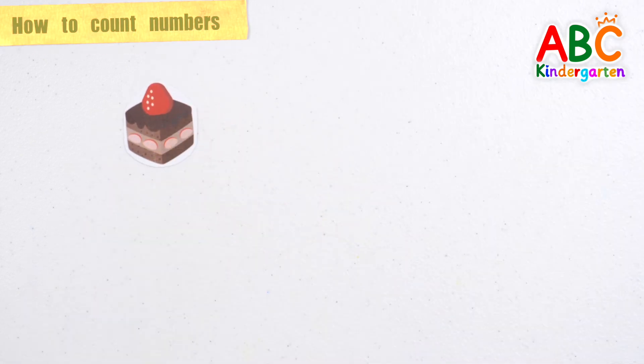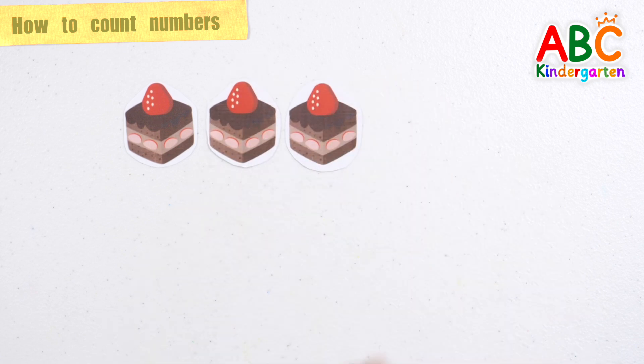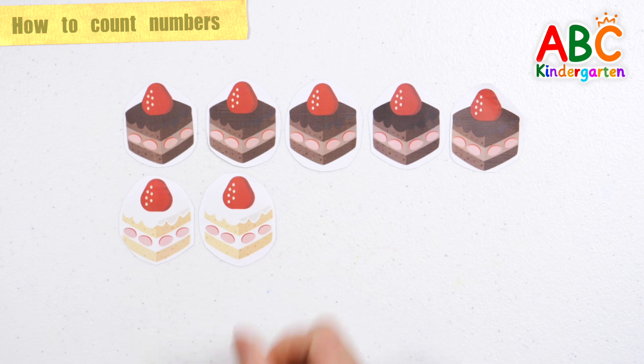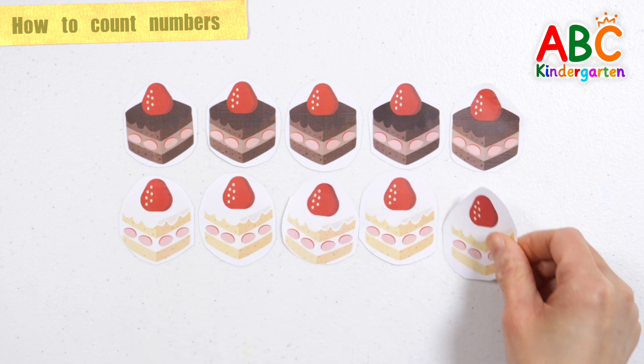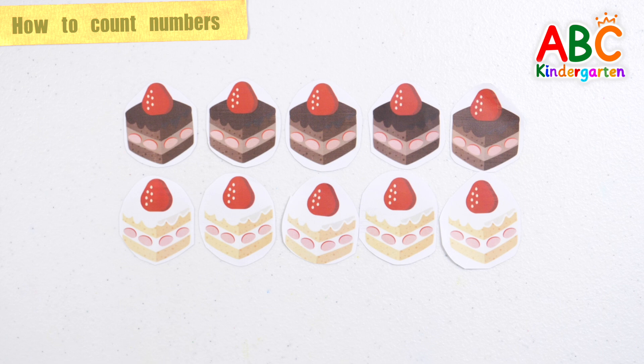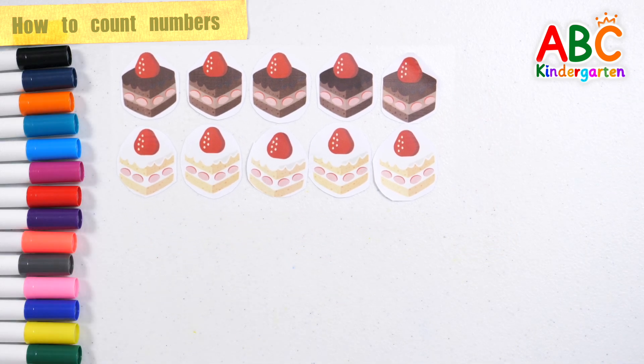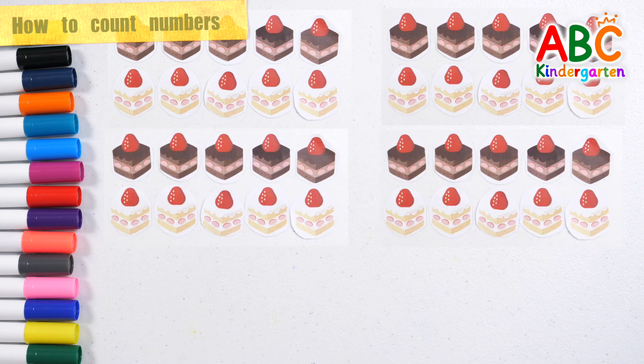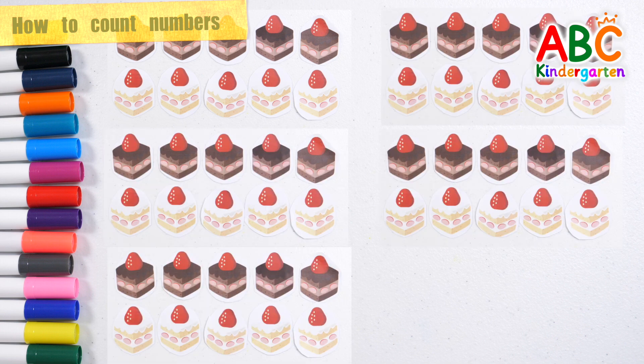Let's learn numbers by counting how many cakes there are. 1, 2, 3, 4, 5, 6, 7, 8, 9, 10. There are 10 cakes. 10, 20, 30, 40, 50. 50 cakes. Great job!